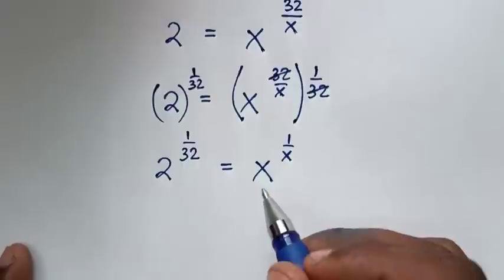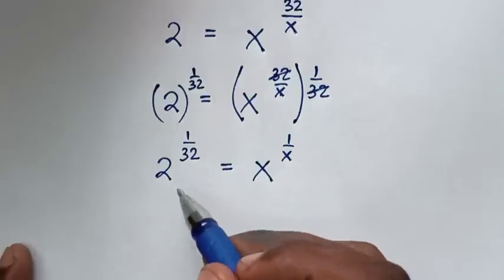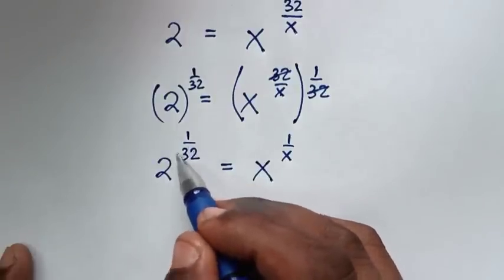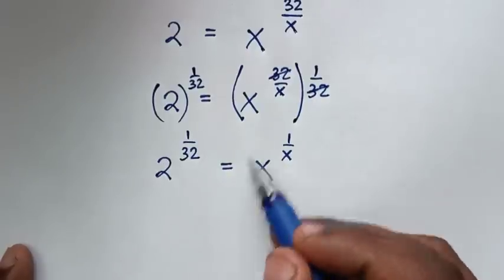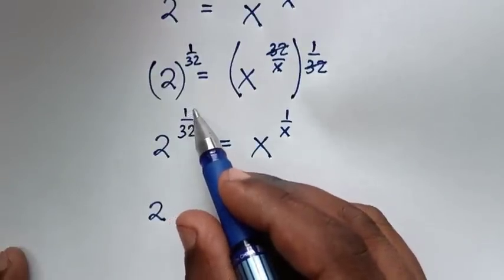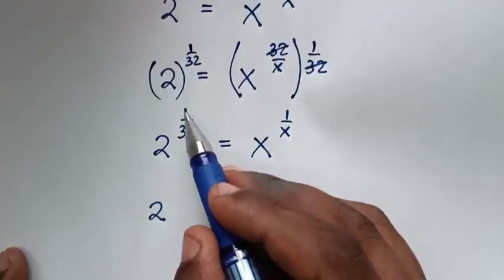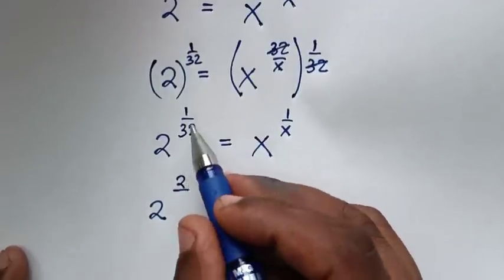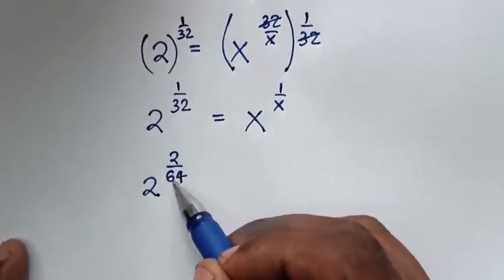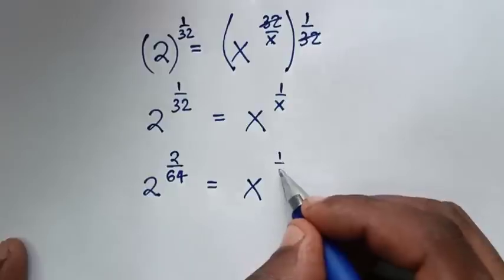Now, because we have x as the base and 1 over x as the power, we want to make the base and the denominator of the power the same. We multiply the numerator and denominator of the power by 2, so 1 over 32 becomes 2 over 64. This simplifies back to 1 over 32, confirming it is equal to x power of 1 over x.